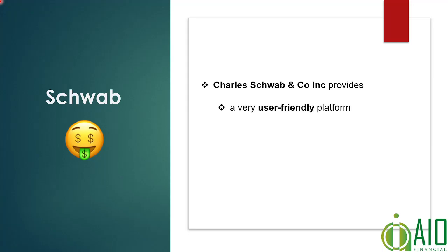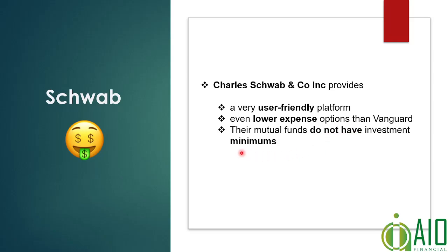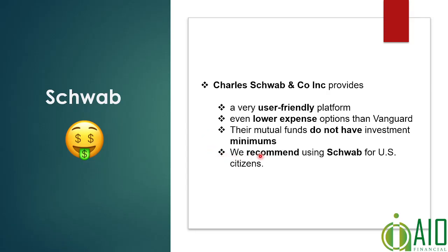Schwab is a great option. They have a very user-friendly platform. It's not great for determining returns on investments or portfolio growth, but it's easy to buy and sell and will do the basics of reporting. They have very low expense ratio options, and their mutual funds do not have investment minimums, so that makes them nice. If you're doing target date funds, open your accounts at Schwab and use the Schwab target date funds — we actually recommend Schwab for US investors.